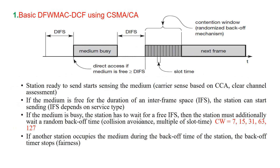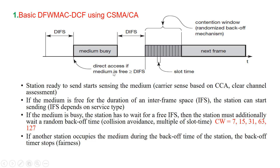The first mechanism is the basic DCF MAC using CSMA/CA. The mandatory access mechanism of IEEE 802.11 is based on carrier sense multiple access with collision avoidance — a random access scheme with carrier sense and collision avoidance through random back-off. If the medium is idle for at least a DIFS duration, a node can access the medium at once. This allows for short access delay at light load, but as more nodes try to access the medium, additional mechanisms are needed.